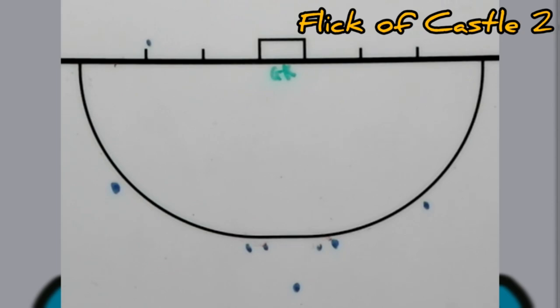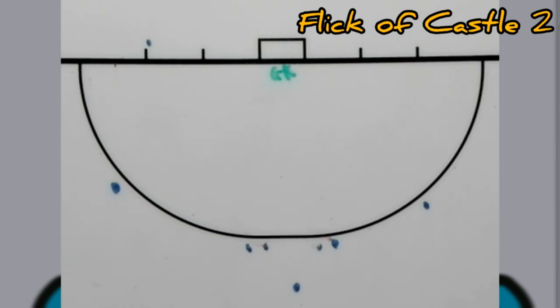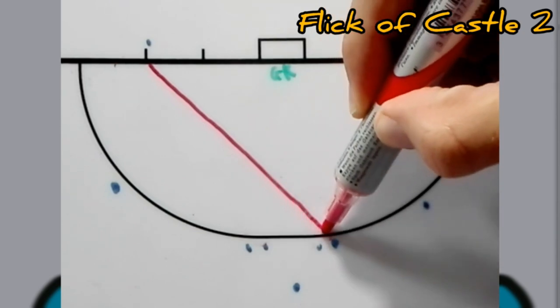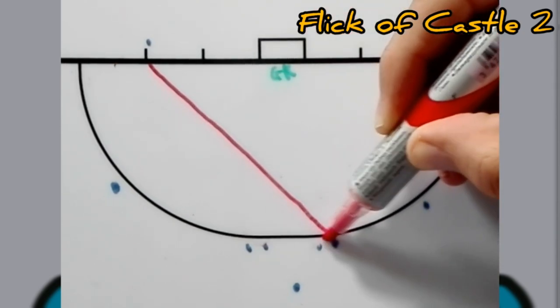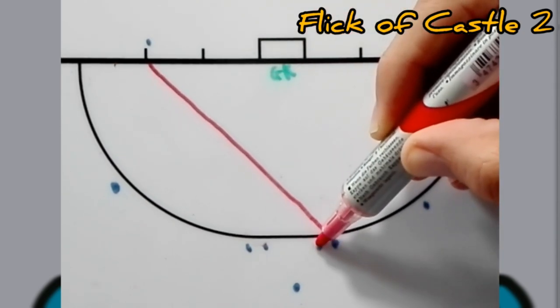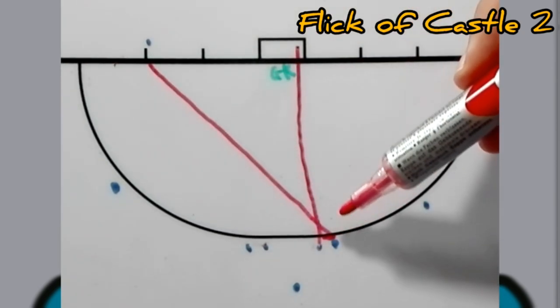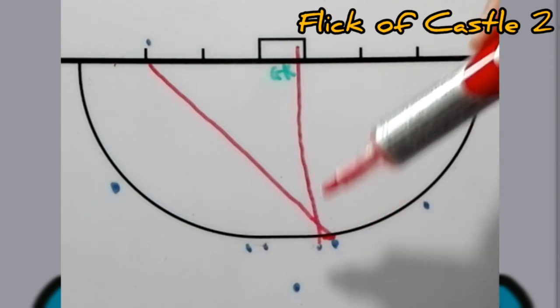Variation number three is flicking off castle two. So the injector will inject the ball to castle two stopper. They will stop the ball and the drag flicker will then just drag off castle two.